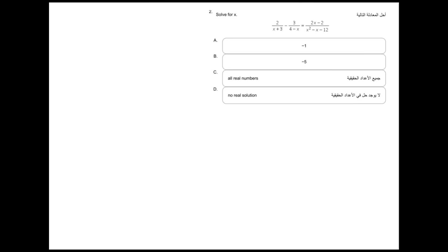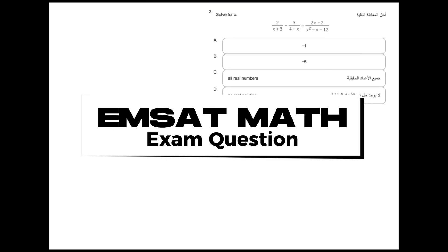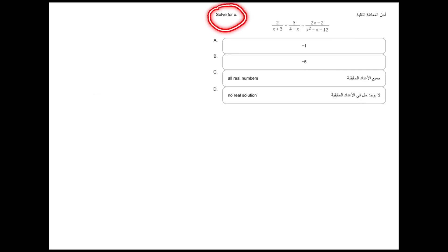So in front of us we have an MSAT Mathematics problem. This is related to the algebra part of the MSAT Mathematics where we need to solve for x. We have an equation where we need to find the x in order to make sure that the equation is correct. So how do we go about this? The first thing that you need to do, let's write down the problem on this side just to make sure that everything is quite clear and systematic.